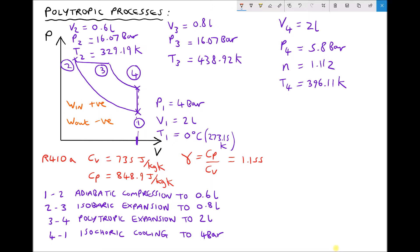So the first thing that we have moving from position 1 to position 2 is adiabatic compression. We know during this adiabatic compression we have a pressure P1 of 4 bar and a volume V1 of 2 liters, and the gas is being compressed until the pressure increases to 16.07 bar and the volume is decreased to 0.6 liters. The previous video explained how we could calculate P2 if V2 is known.